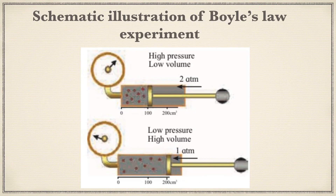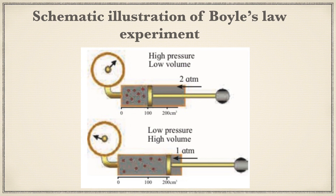Here is one more diagram showing the Boyle's law experiment: when more pressure (2 atm) is applied, the volume decreases; when pressure is reduced to 1 atm, the volume increases. Always remember the statement of Boyle's law: at constant temperature, the pressure of a fixed amount of gas varies inversely with the volume. Next time we will do the graphical representation of Boyle's law, the relation between pressure and density, and Charles' law.